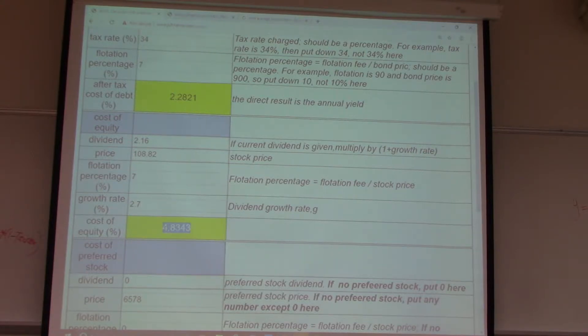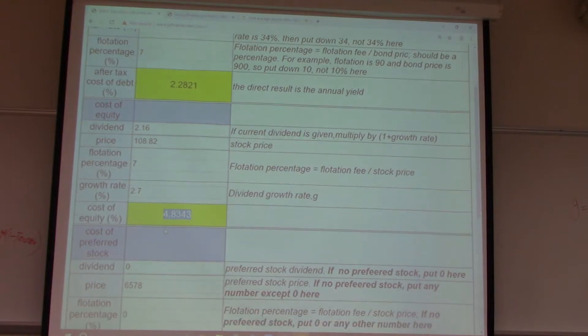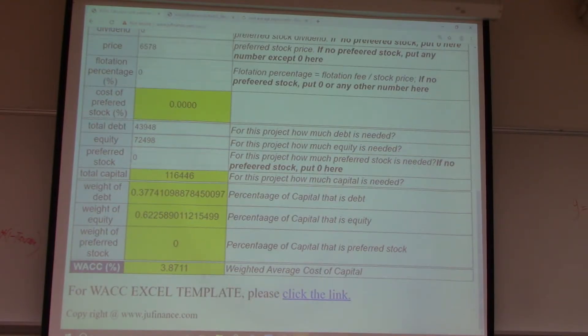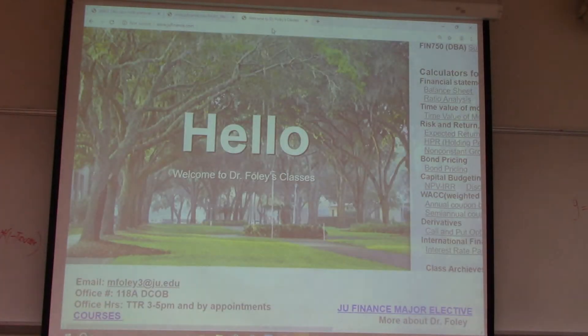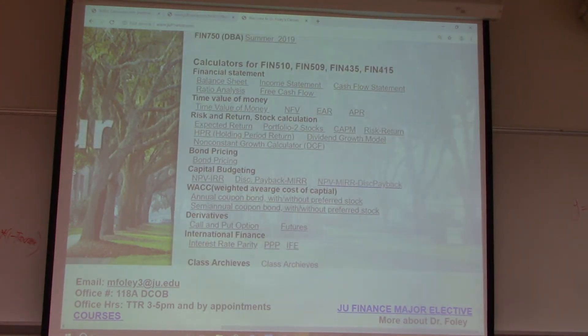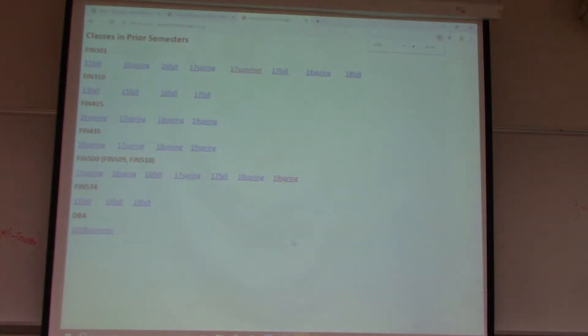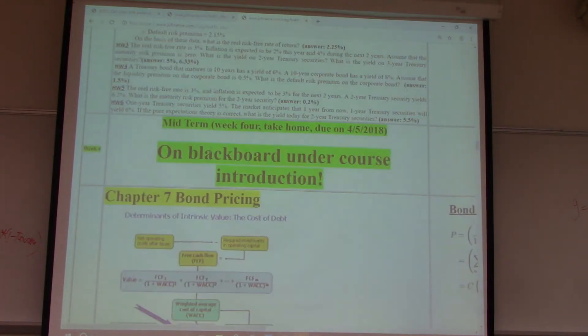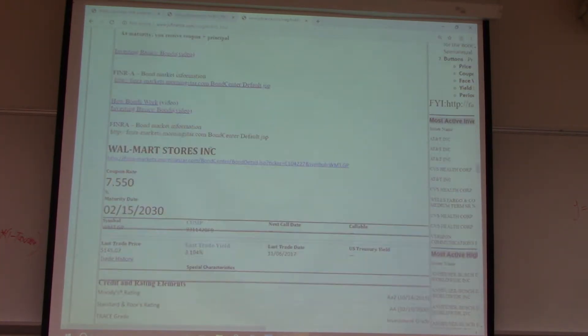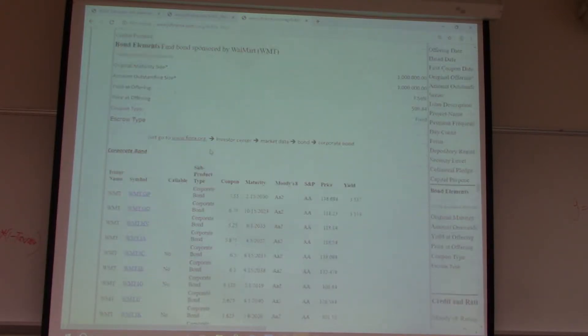So you see, cost of debt is just returns to the bondholders, yield to maturity. Cost of equity is just returns to the stockholders. We can use dividend growth model or CAPM model to calculate it. But for debt, you have to consider flotation cost and also the tax rate. For stock, you have to consider flotation cost. So what we got is, WACC is 3.8711. So if you go to my website, there's a WACC calculation by a group of students doing, taking the investment competition. That's their document.